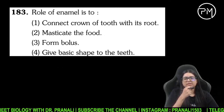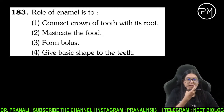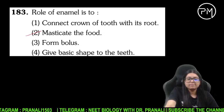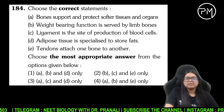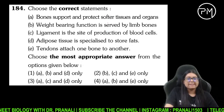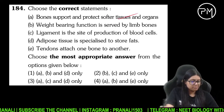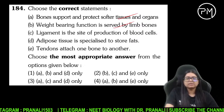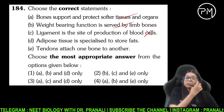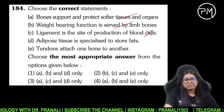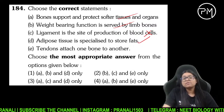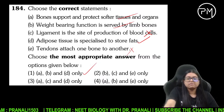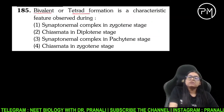Enamel kya karta hai? Dant ke upar jo enamel hai — 183 — food ko chabane mein madad karta hai, helps to masticate the food. Correct statement: bone support and protect soft tissue and organs — bilkul sahi. Weight bearing is served by limb bones. Ligament mein blood cells bante hain kya? Nahi, bone marrow mein bante hain. Adipose tissue mein fat store hota hai — bilkul hota hai. Tendon one bone to another karta hai kya? Nahi, ligament one bone to another karta hai. Isliye 184 ka answer 1 ho jayega.